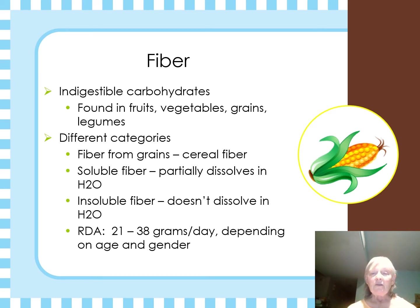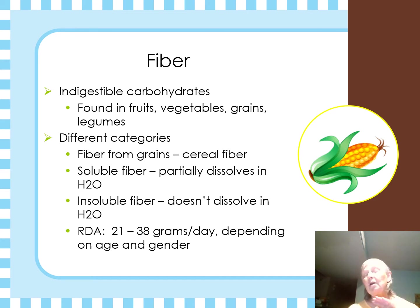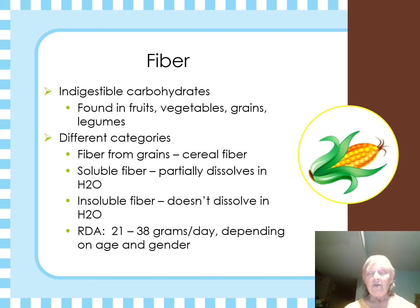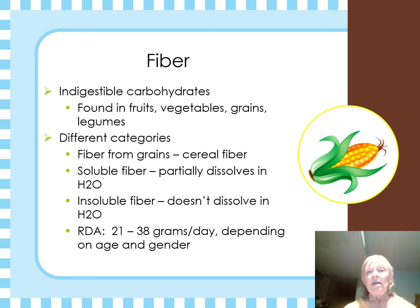We find fiber in our fruits, our vegetables, our grains. Soluble fiber partially dissolves in water; insoluble can't. If you see the commercials on Quaker Oats — if you're eating oatmeal, oatmeal is really good because it's fiber and it actually moves through the digestive system for you. The other things that fibers do for us: they help reduce the risk of heart disease, diabetes, diverticulitis, and constipation.